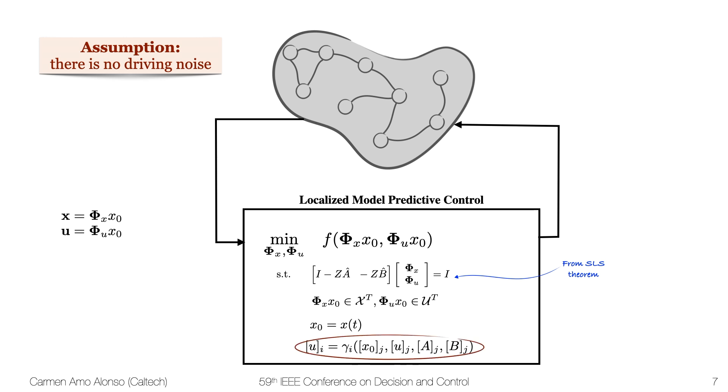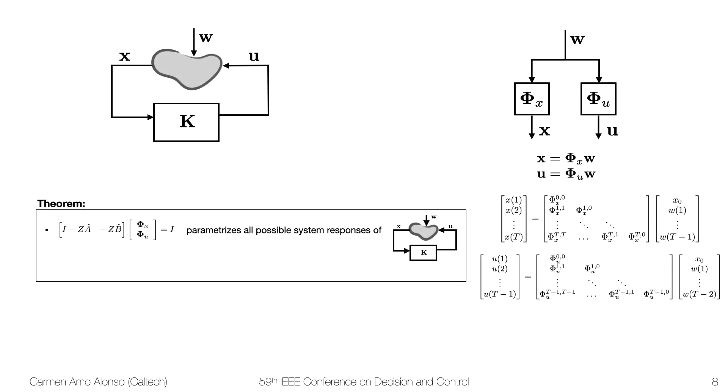Now let's see how SLS can help us with the locality constraints. It turns out that the SLS theorem has another statement that relates the controller k with phi_x and phi_u. This has interesting implications.